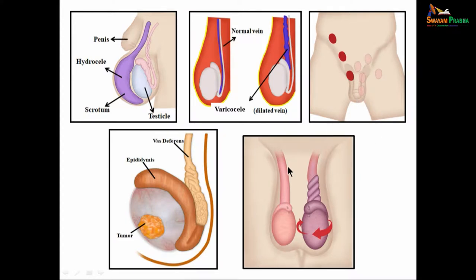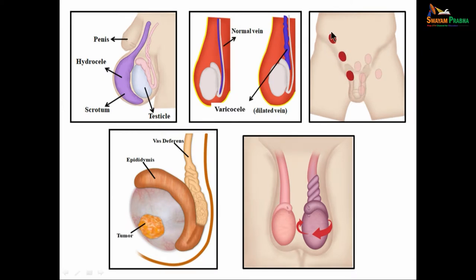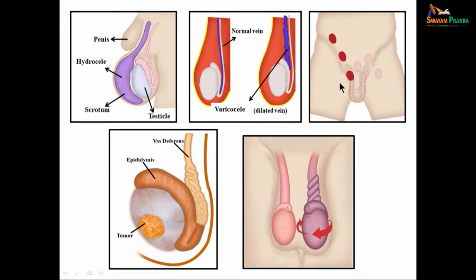More interestingly, the testes is an organ which develops intra-abdominally and at a later part of development descends into the scrotum. Due to some reasons, sometimes the testes may not descend into the scrotum. This picture shows the testes present intra-abdominally and the course through which the testes descends down. Sometimes the testes may not descend at all — that we call it as the undescended testes. Sometimes the testes may deviate from its normal course of descent and be found elsewhere — that we call it as the ectopic testes.